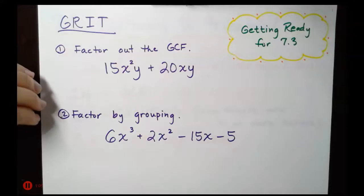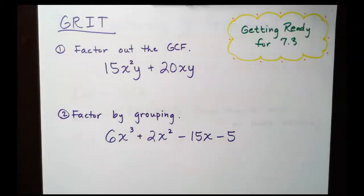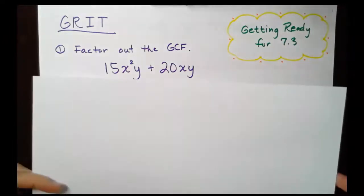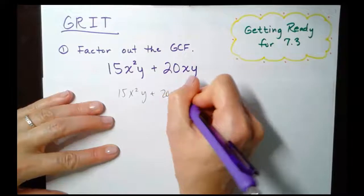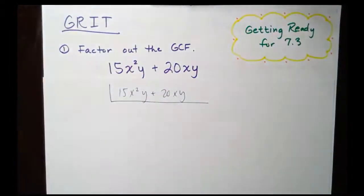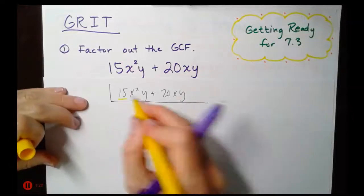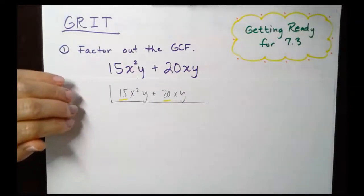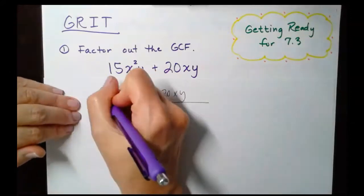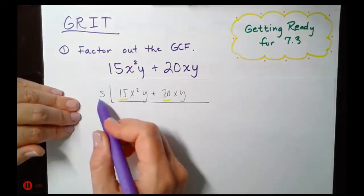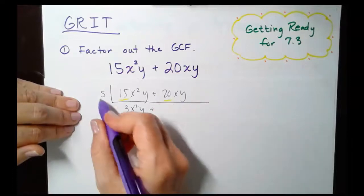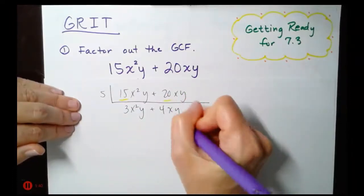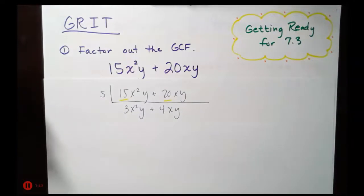So let's check your warm-up problems. Remember, when we are factoring out the greatest common factor, it's best to use the factor ladder approach. So if we have 15x²y plus 20xy, first just look at the coefficients. 20 and 15 are the coefficients. The greatest common factor of 15 and 20 is 5, so let's take out the 5. 15 divided by 5 is 3, then bring down the x²y. 20 divided by 5 is 4, bring down the xy. So we've taken out the coefficients' greatest common factor.